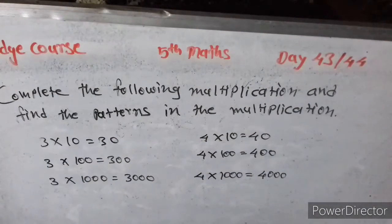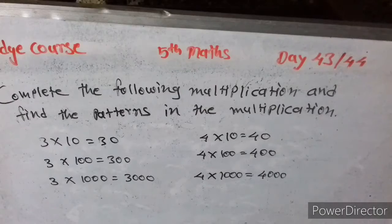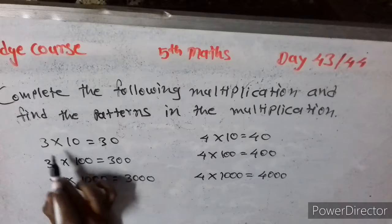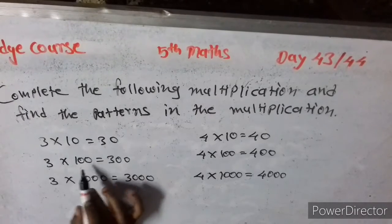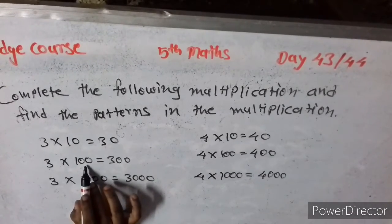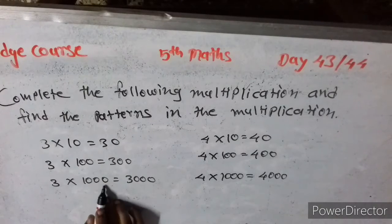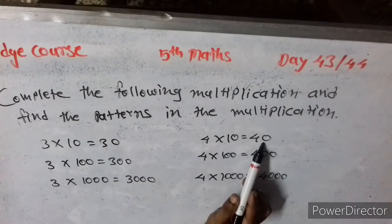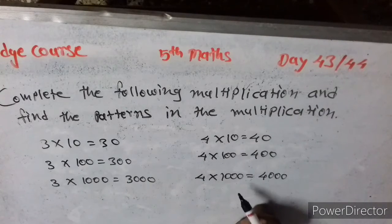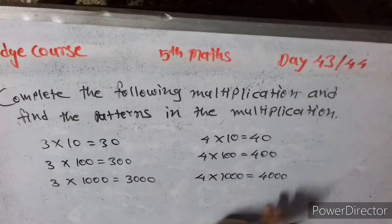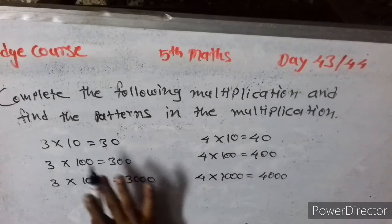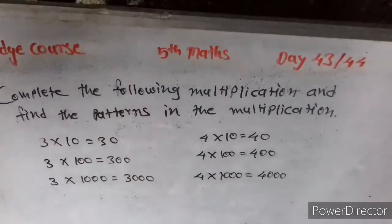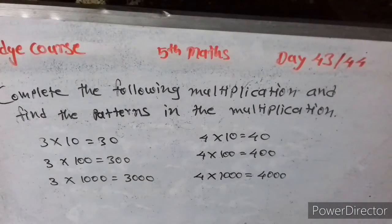Complete the following multiplication and find the factor in the multiplication. Total multiplication by 1000, three zero.